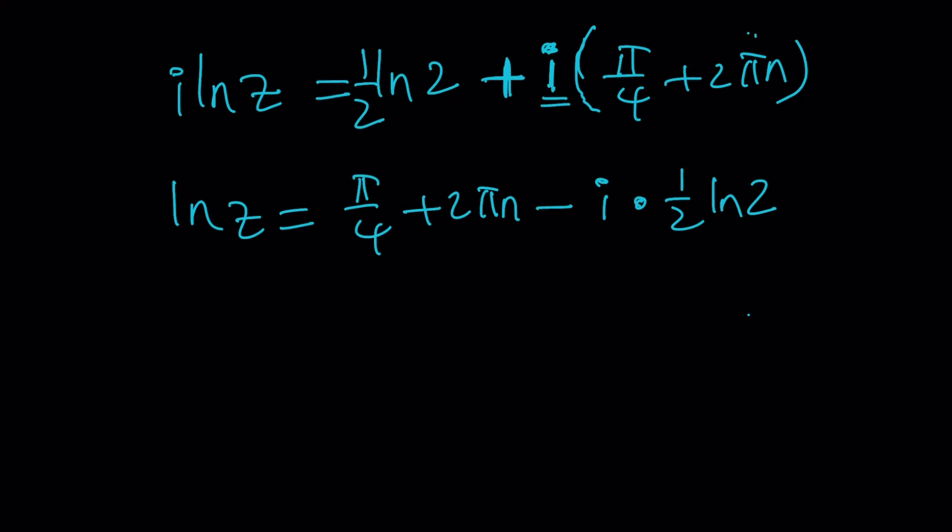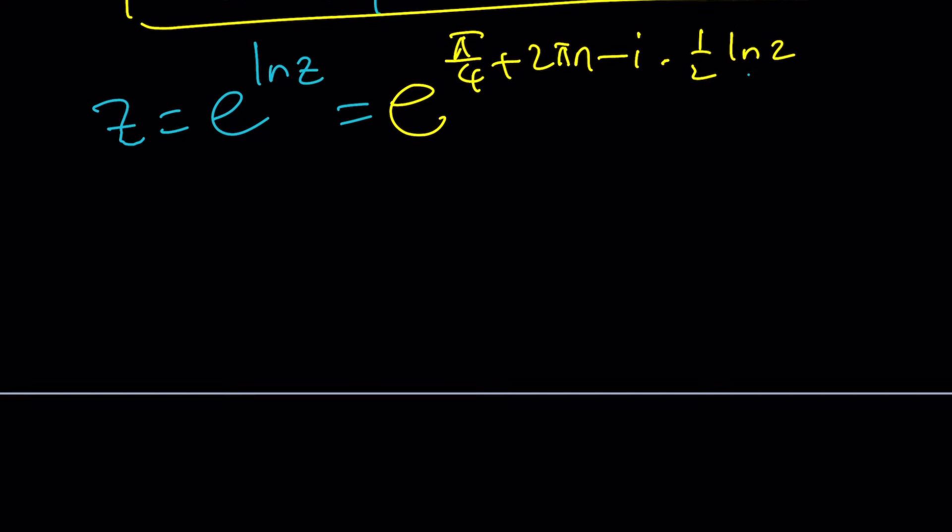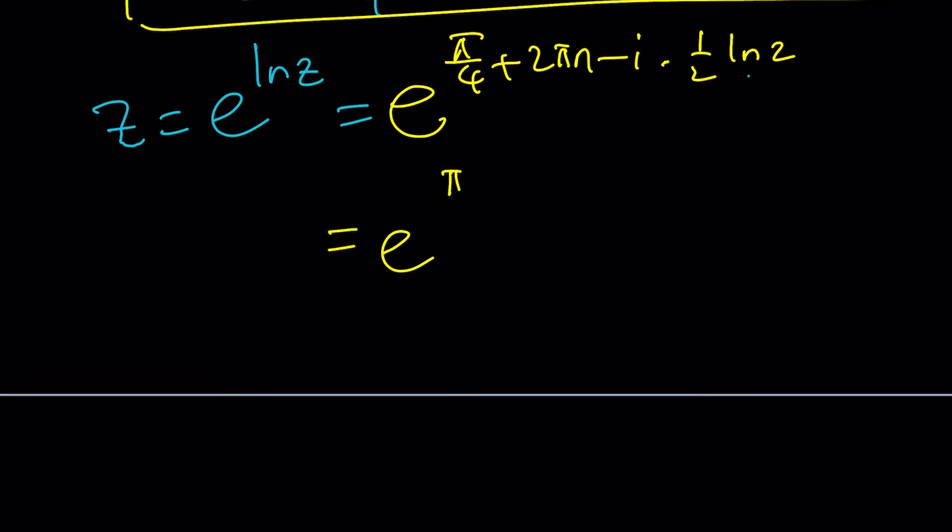Multiply everything by negative i. ln z is going to be negative i squared is going to be 1. So it's going to be pi over 4 plus 2 pi n minus i times 1 half ln 2. You can write this in so many different ways. This is ln z. How do you find z from ln z? We have an identity. z equals e to the power ln z. So if that's ln z, I can go ahead and exponentiate it to get z.